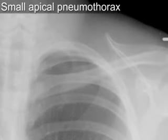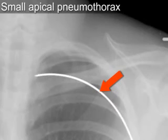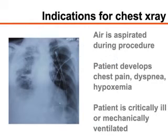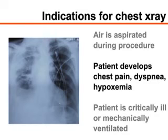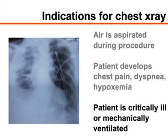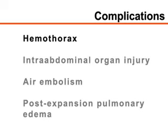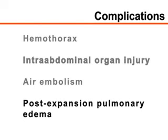Pneumothorax is uncommon after thoracentesis and, when present, it rarely requires the placement of a chest tube. Chest radiographs are not required after simple, uncomplicated procedures. Radiography of the chest should be performed if air was aspirated during the procedure, if chest pain, dyspnea, or hypoxemia develops, or if the patient is critically ill or undergoing mechanical ventilation. Other complications of thoracentesis include pain, coughing, and localized infection. More serious complications include hemothorax, intra-abdominal organ injury, air embolism, and post-expansion pulmonary edema.